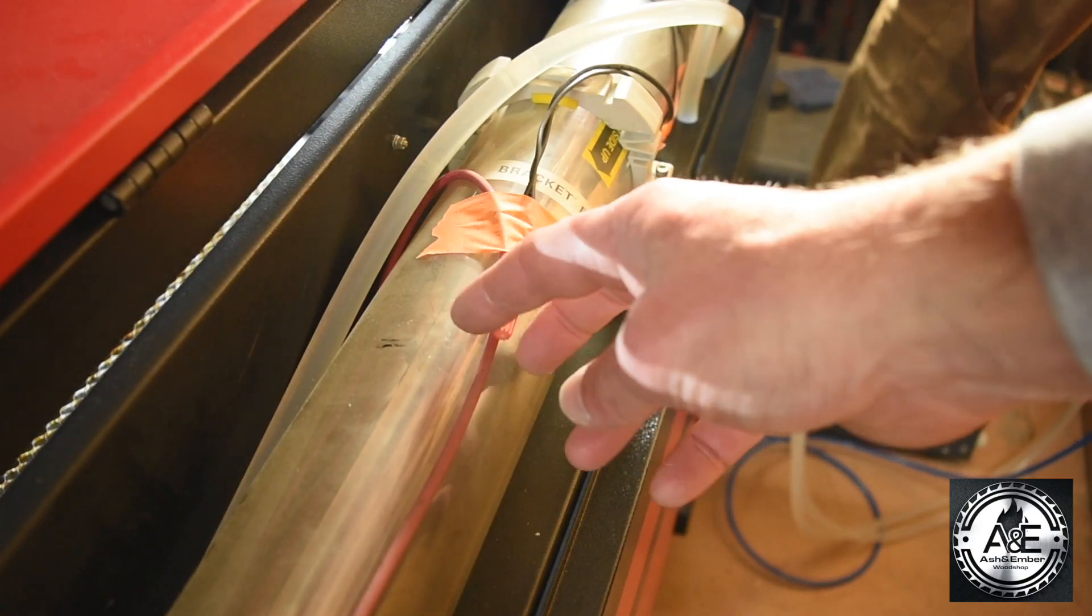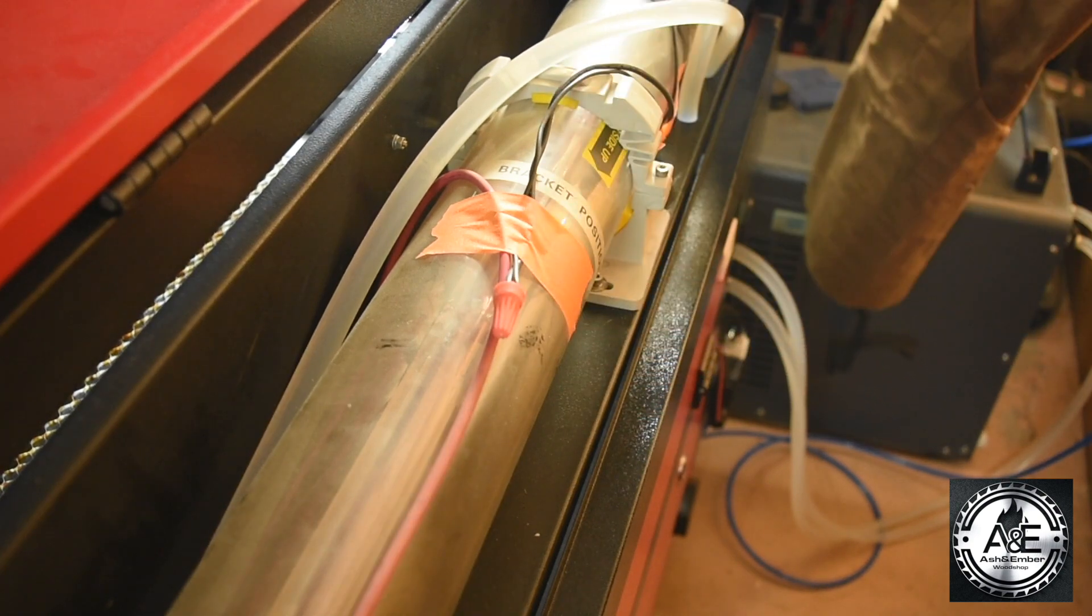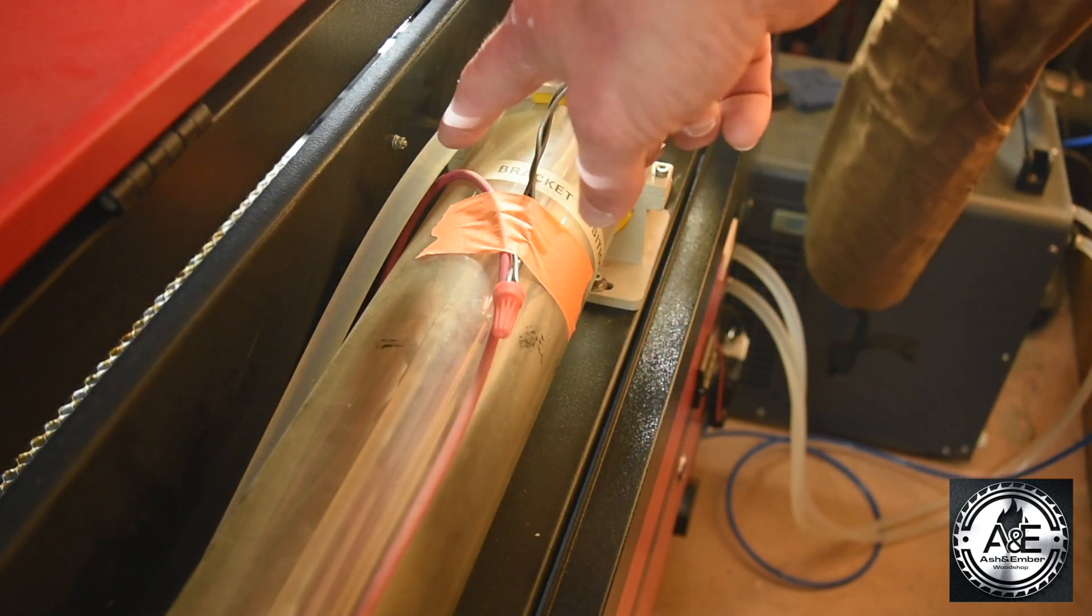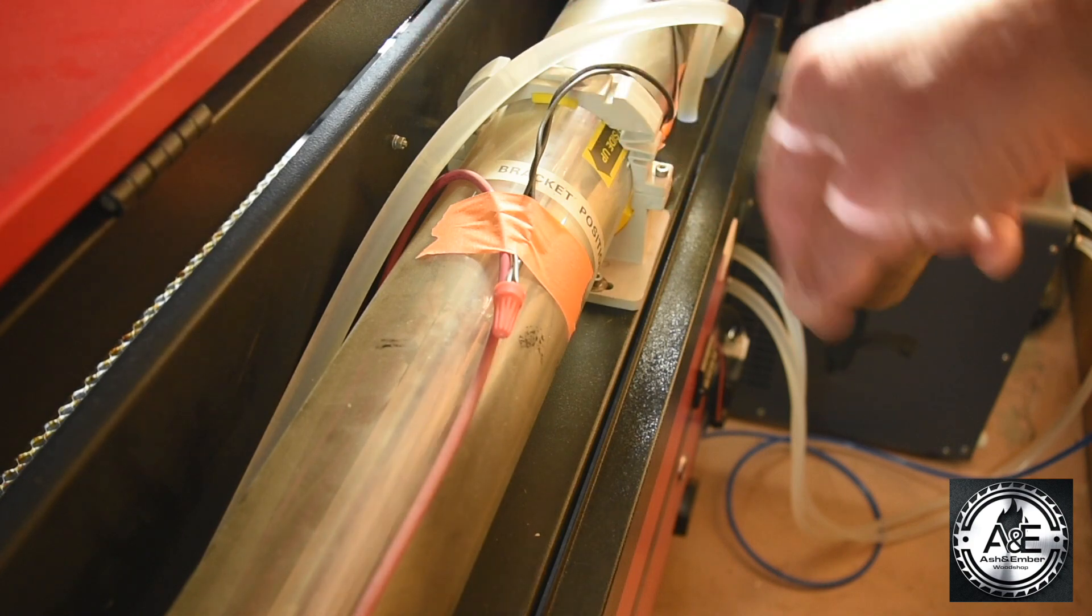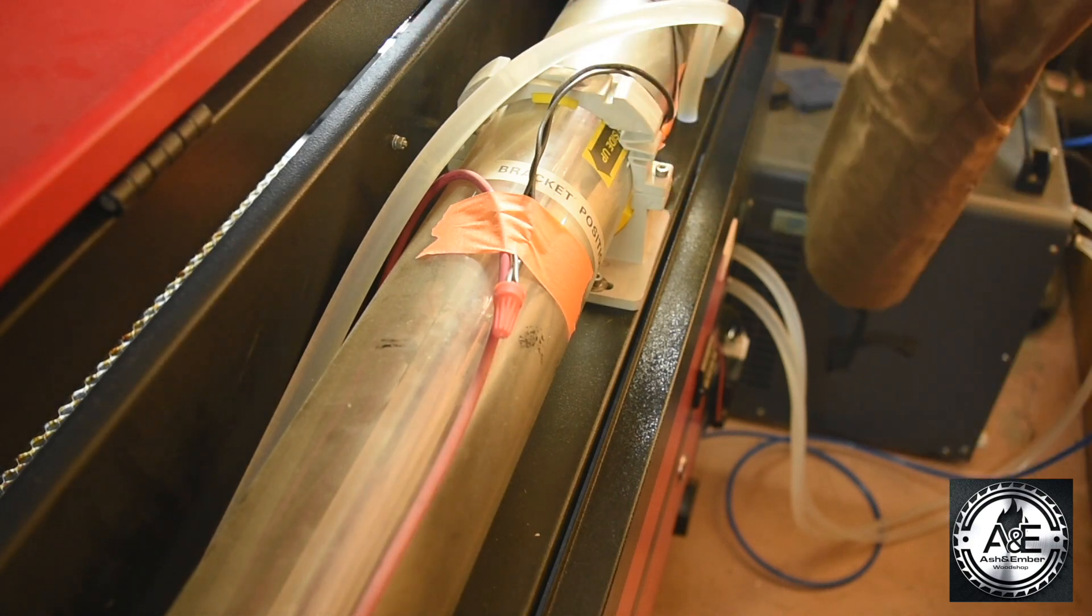Now for your negative connection, a simple wire nut will work. Just tie the two black wires together. Again, making sure you're not pinching any of your water lines or any wires between the tube and the housing.